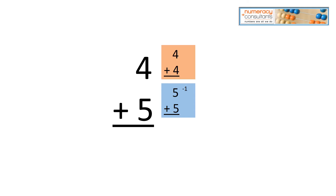If we use the double of four, we know that we're changing the problem from four plus five to four plus four, so we're going to be under the answer by one. We're going to go plus one. Whether you use five plus five minus one, or four plus four plus one, you get the same answer.